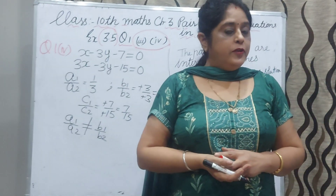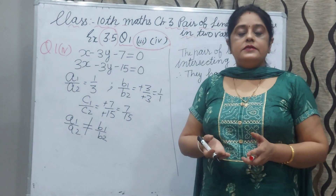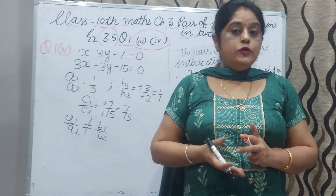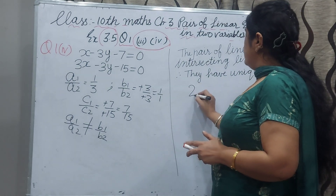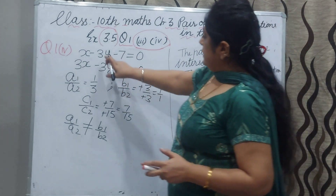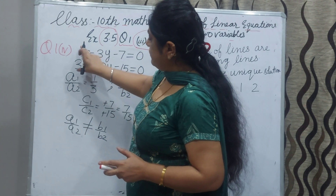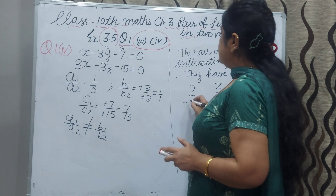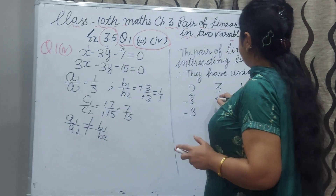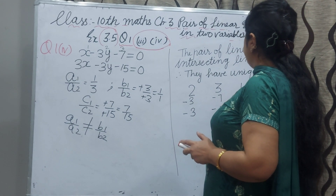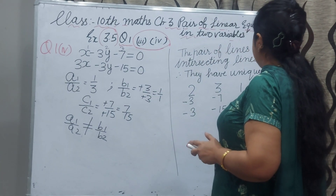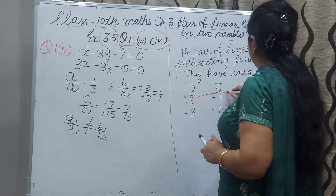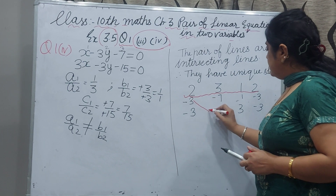Since we found it is a unique solution, we solve by the cross multiplication method. For the setup, we write the coefficients in order: first write the coefficient of y — minus 3 and minus 3 — then the constant term — minus 7 and minus 15 — then again the coefficient of x — 1 and 3 — and then again the coefficient of y — minus 3 and minus 3. Now cross multiply these terms.